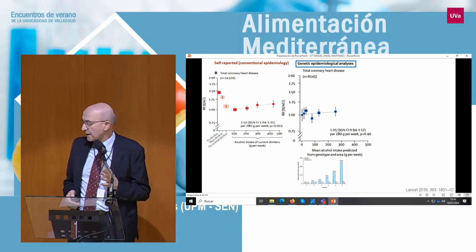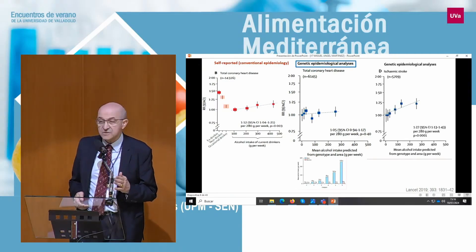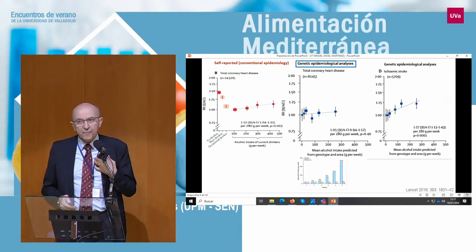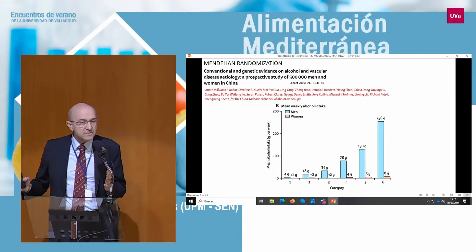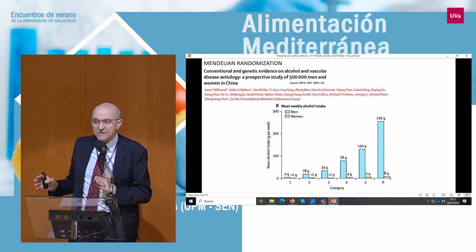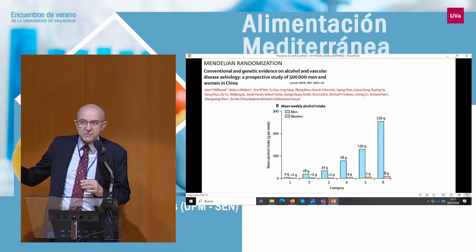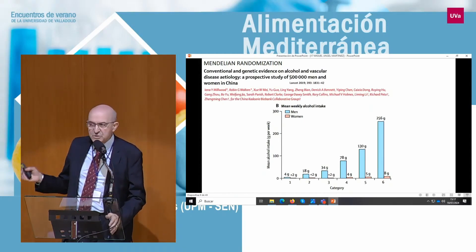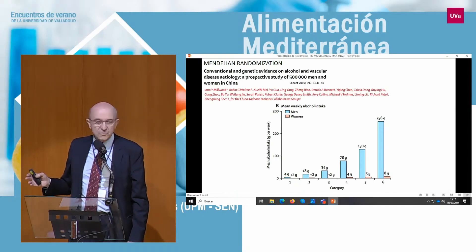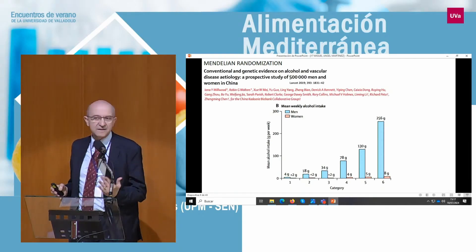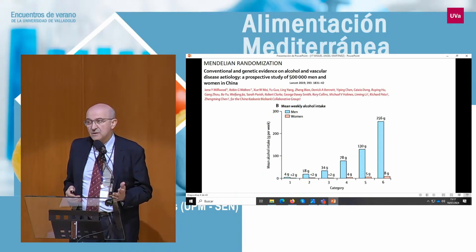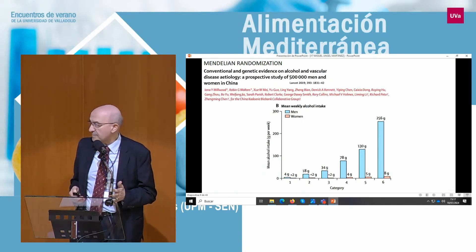For coronary heart disease, that association disappeared, but for stroke the association was adverse, harmful, and linear. For me, it is surprising that they present the average consumption of alcohol according to these six categories in males — you see the monotonic upward trend — but these are just the means. Where are the standard deviations? Where are the confidence intervals? They do not present confidence intervals, because for sure there is a lot of overlapping among categories. In epidemiology, we always present means with standard deviation or confidence intervals. So this could be a misclassified version of the true exposure to alcohol — a problem with Mendelian randomization studies.